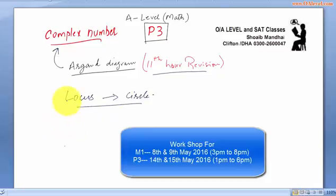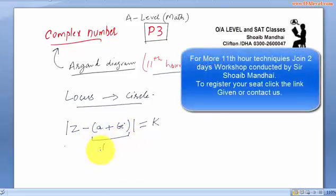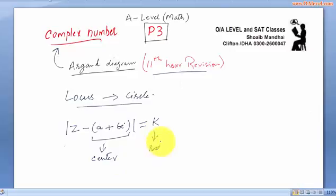The general equation z minus a plus bi equals some constant value. This is the general equation of a circle where a and bi represents the center of a circle and k represents the radius.